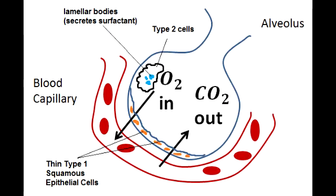This is important to know because premature babies may not have mature levels of surfactant, which can lead to breathing problems. What are Clara cells?